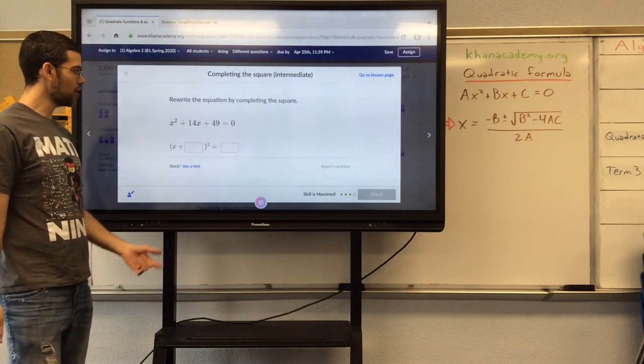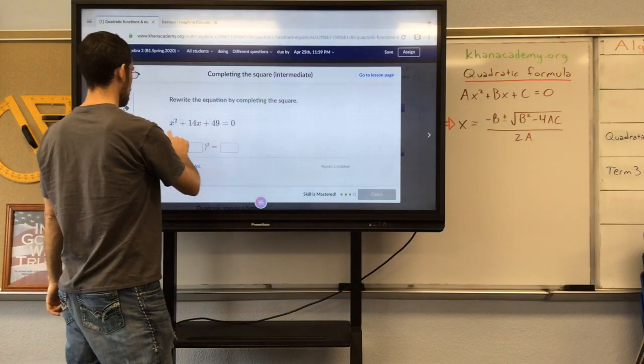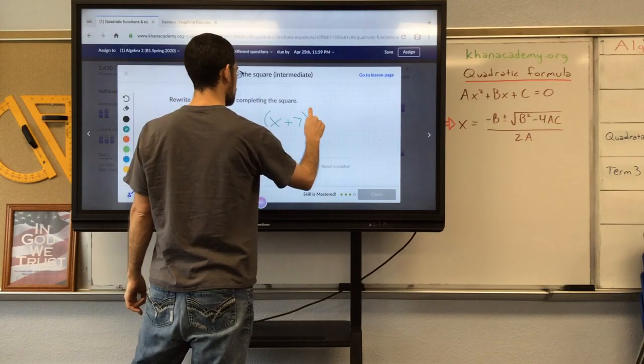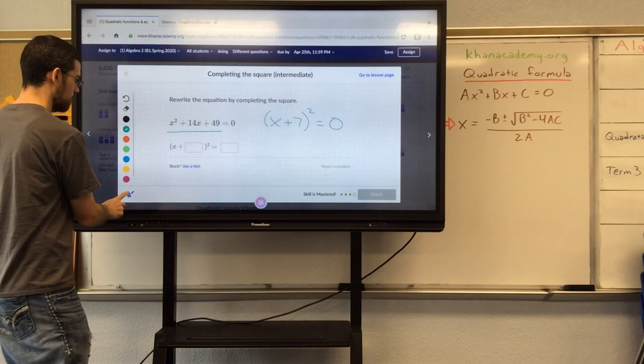Next question, rewrite this one. That also is a perfect square trinomial because half of 14 is 7, and 7 squared is 49. So I can rewrite this as x plus 7 squared equals 0. And that's in the form I want it in. So I'm going to put plus 7 here and 0 here. And we're done.